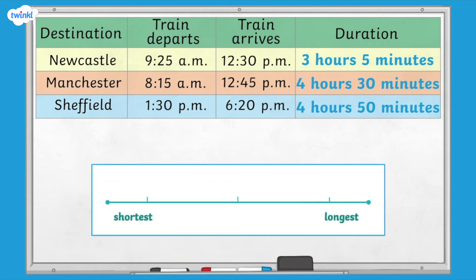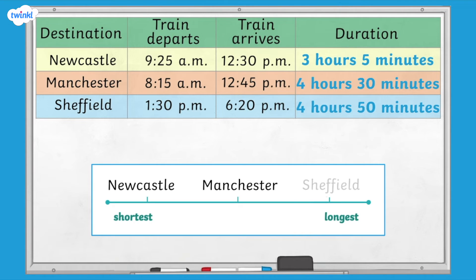Now that we know the durations of the train journeys, we can compare them. We can see that the duration of the train journey to Newcastle is the shortest, followed by Manchester, and finally, Sheffield is the longest train journey.